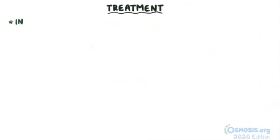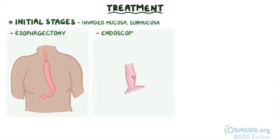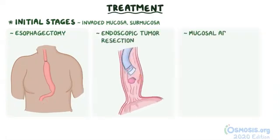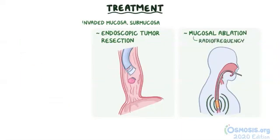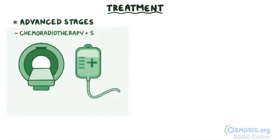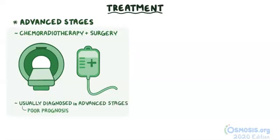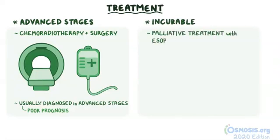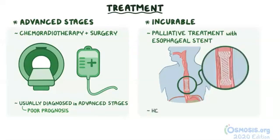Treatment depends on the stage. For initial stages, when the cancer has invaded just the mucosa and submucosa, options include esophagectomy, endoscopic tumor resection, or mucosal ablation, which is when the cancerous mucosa is removed by radiofrequency. For more advanced stages, chemoradiotherapy is used in combination with surgery. Unfortunately, esophageal cancer is usually diagnosed in advanced stages, so it's considered a poor prognosis cancer. When the cancer is incurable, palliative treatment with an esophageal stent — a tiny tube placed inside the esophagus to keep it dilated — usually helps reduce dysphagia.